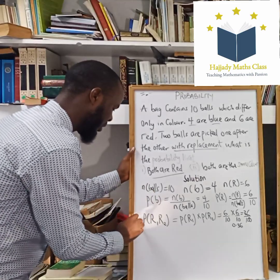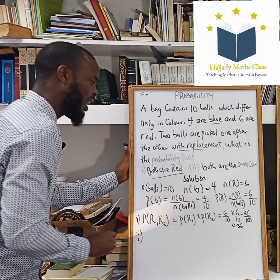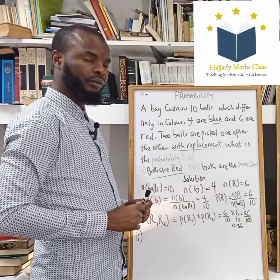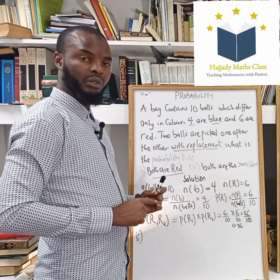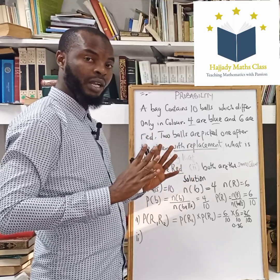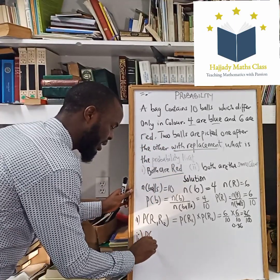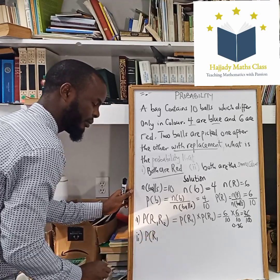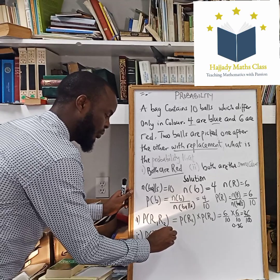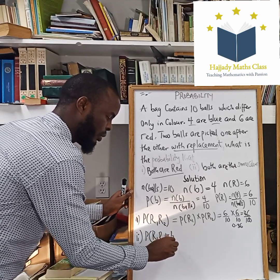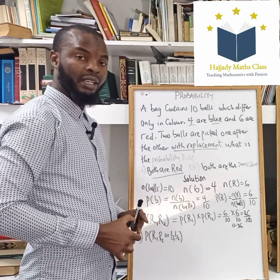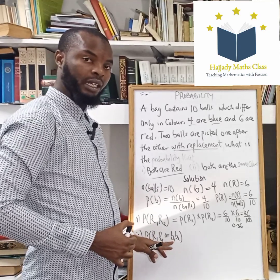The second part: both are the same color. That is, it's possible that the first two balls picked are both red or they are both blue — those are the two possible outcomes. So it is possible that the first ball picked is red and the second is also red, that is of the same color; or the first ball picked is blue and the second ball picked is also blue.